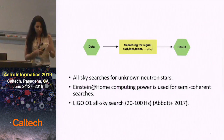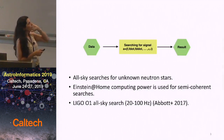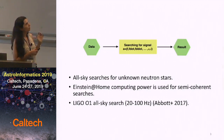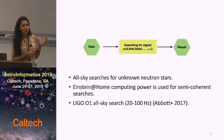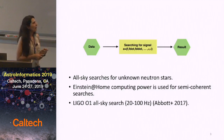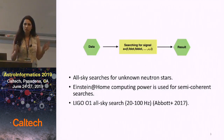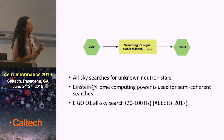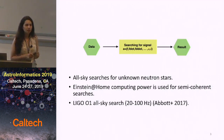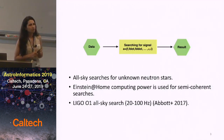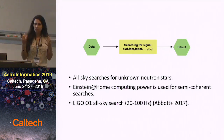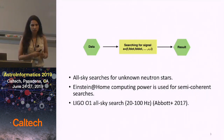A gravitational wave can be defined with its frequency, frequency derivatives, and the sky location with alpha and delta. If we have some observational data, we use a searching method like matched filtering to search over the possible signals that might be in the data, and the result would be the likelihood of having that kind of signal in the data.